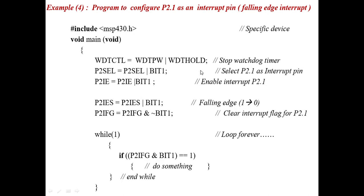Next, since the interrupt occurs on the falling edge, we define P2IES — port 2 interrupt edge select, where IES means interrupt edge select. P2IES = P2IES | BIT1: giving 1 means the interrupt occurs at the falling edge. Next, we need to clear the previous values using P2IFG — interrupt flag — equal to P2IFG and complement of BIT1, which gives 0 to P2.1, clearing any previous value stored in the flag register.